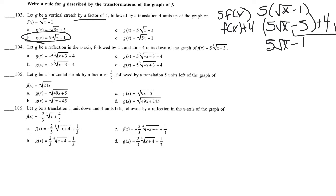Let G be a reflection in the x-axis, that's negative f(x), followed by a translation down 4 units. And it's f(x) minus 4, or that's not again, but...